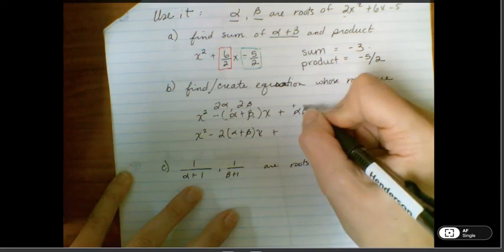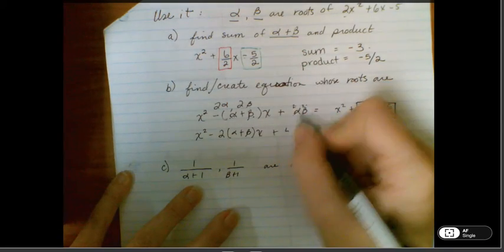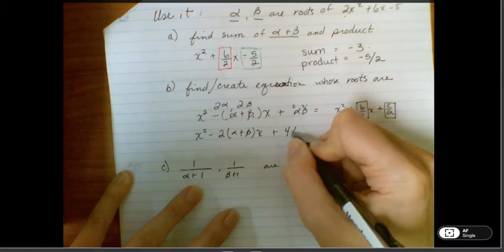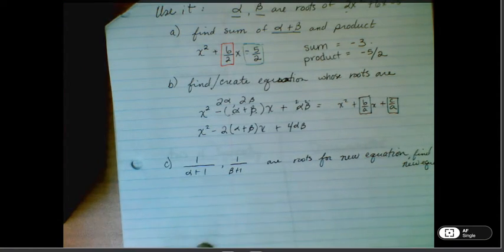Then I get 2 times that and 2 times that, which is going to give us 2 times 2, which is 4 alpha beta. Okay, so we've got pretty much all of the things we need here.